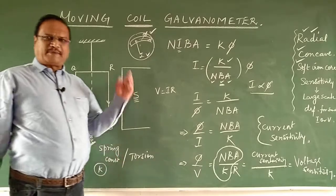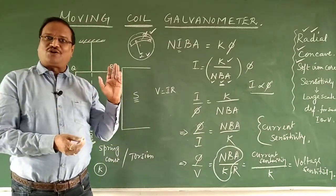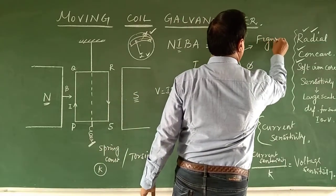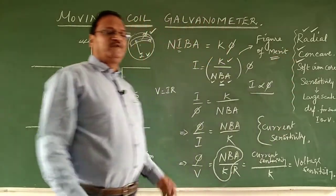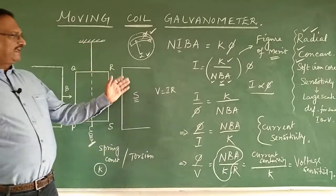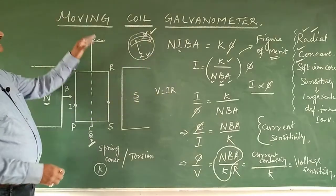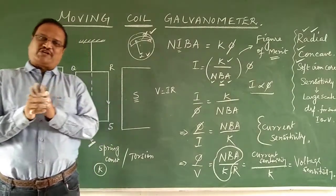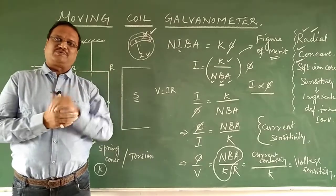In practice, this constant is known as the figure of merit. Finding the figure of merit of a moving coil galvanometer using the deflection method is a practical experiment your teacher will demonstrate. I hope you understand the whole concept — this is the working of a moving coil galvanometer. In the next video, we will study how a galvanometer can be converted into a voltmeter and an ammeter. Thank you.